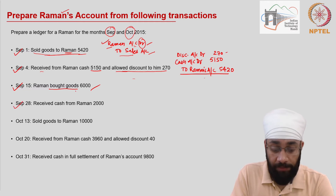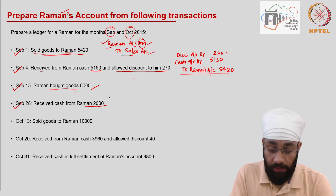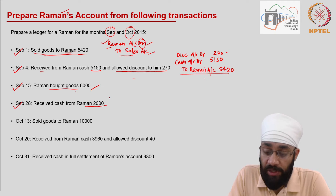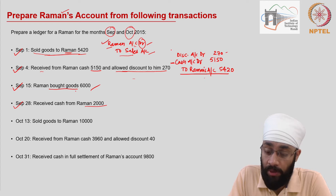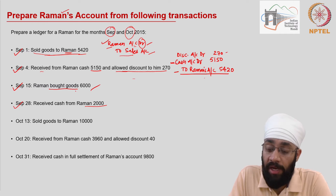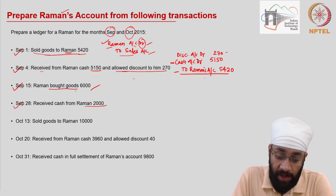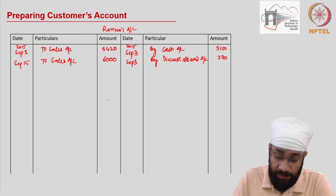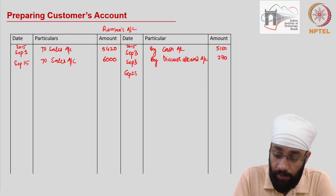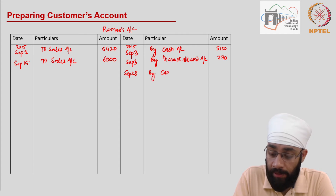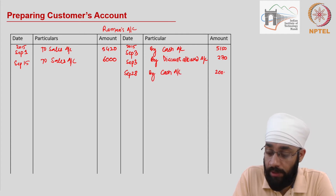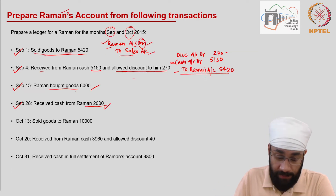On September 28th, you receive cash from Raman of 2000. The journal entry is cash account debit to Raman's account. So I go to the credit side of Raman's account and write 'By Cash Account' 2000. On September 28th, only 2000 has been received — no discount here.